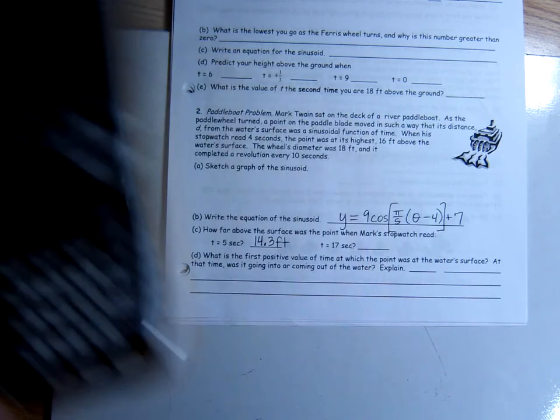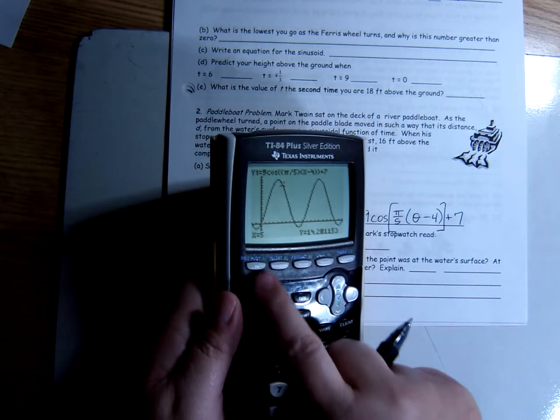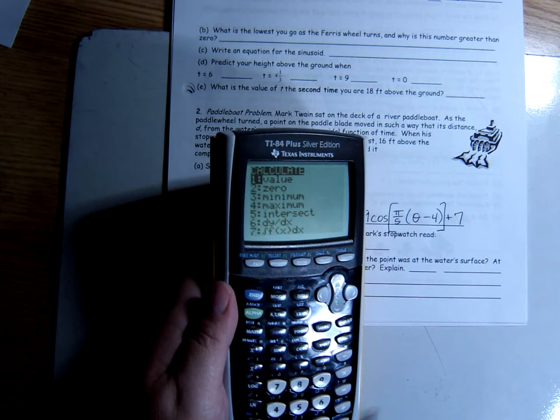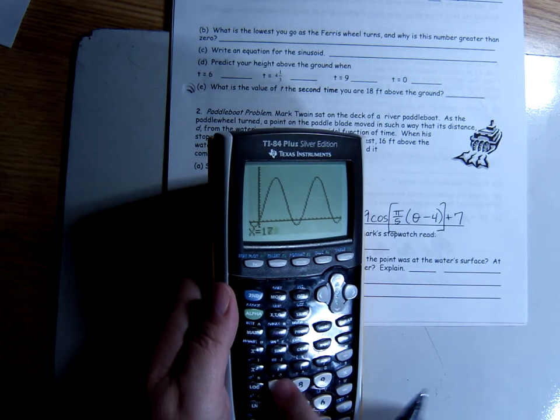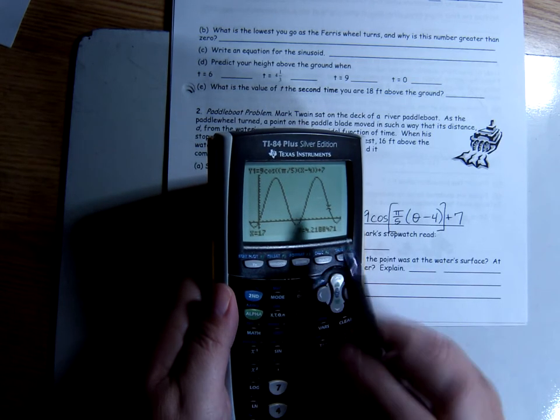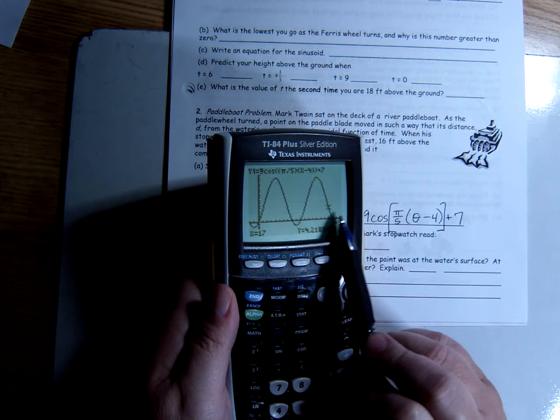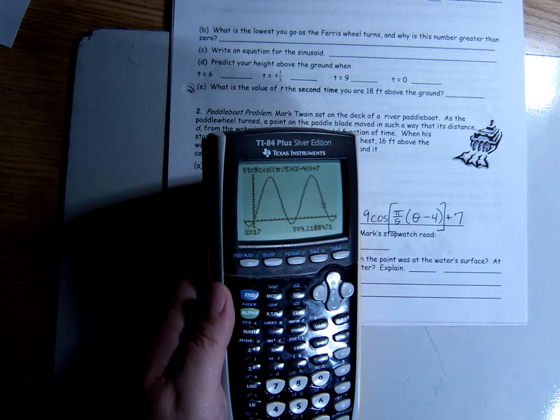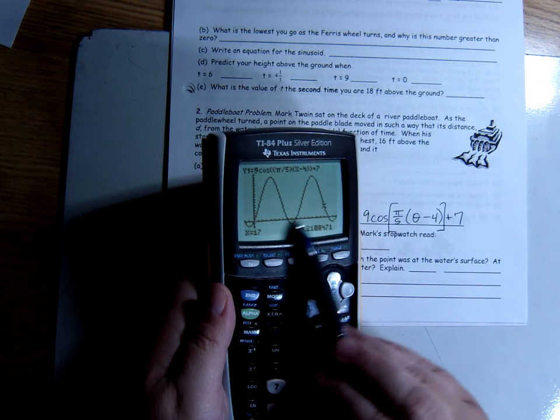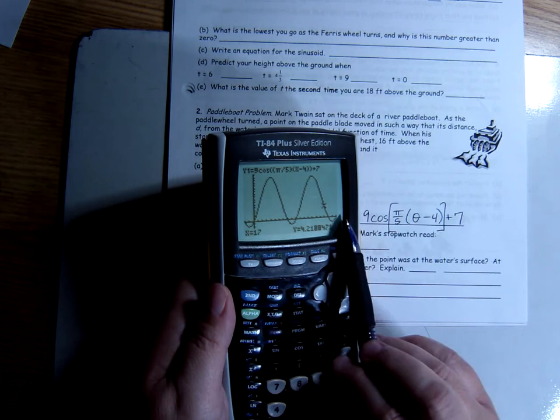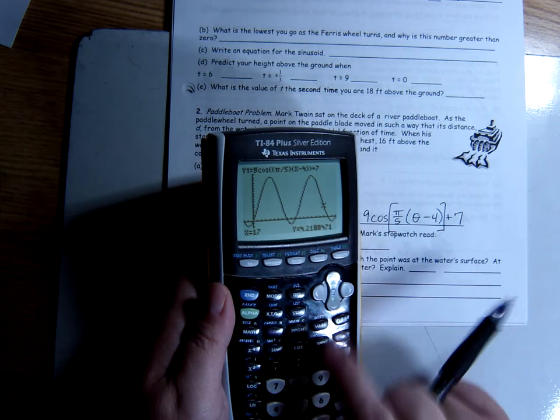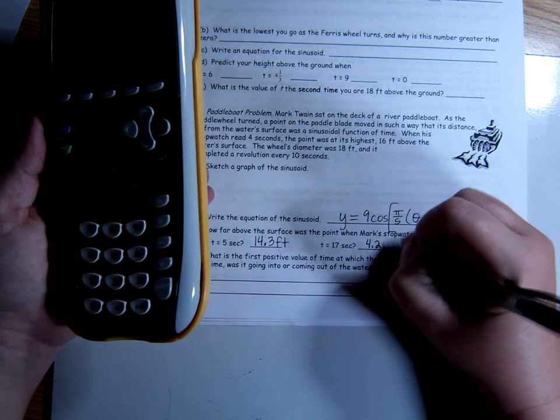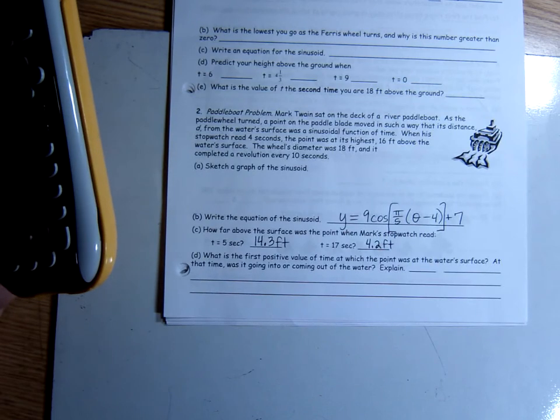Then it asks about when t is 17 seconds. Now, one thing that might happen when you do this, let me just show you. Mine should work, I think. Yeah, mine worked. If your x values didn't go past 17, like maybe you stopped at 14, maybe you stopped at 15, then it might give you an error. So, you may have to enlarge your domain so that you can see x is 17. So, 4.218, so 4.2. So, 4.2 feet above the water surface. If I got a negative number, that would mean below the water surface.